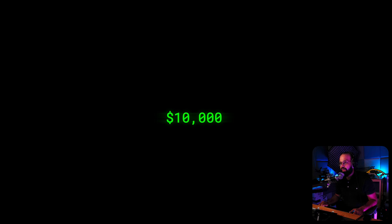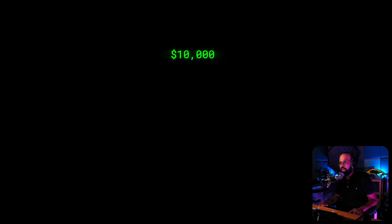What we want to do is spend five thousand dollars. In this example there are three operations: a read — reading how much money is in the wallet — then a subtraction operation, and then an update.